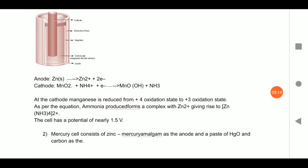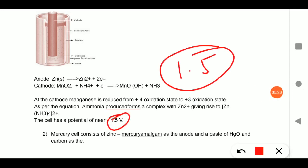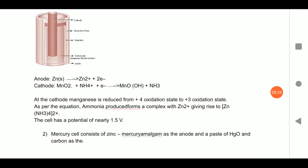This dry cell gives a voltage of 1.5 volts, which is used to light your torch and similar devices. The next cell we will discuss is the mercury cell.